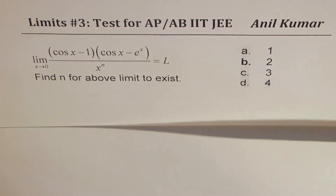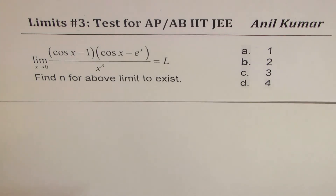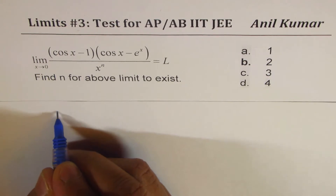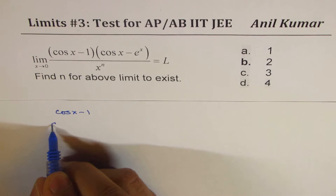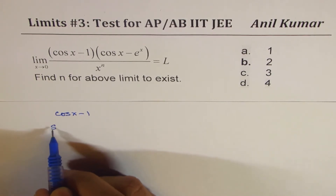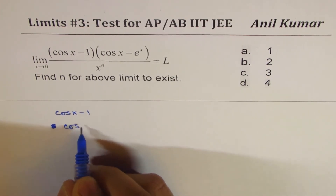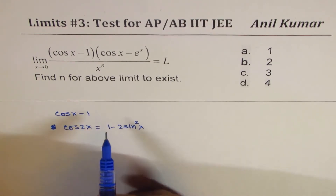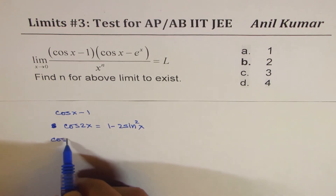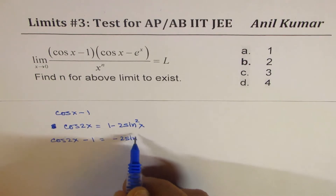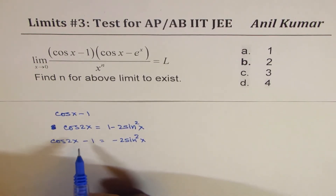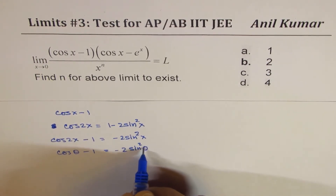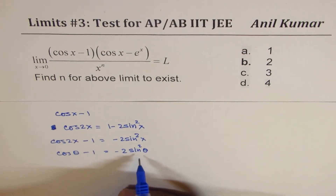The method I'm going to use involves several strategies. First, how to write cos x minus 1: we know cos 2x equals 1 minus 2 sine squared x. Rearranging, cos 2x minus 1 equals minus 2 sine squared x. Converting to half angle gives cos theta minus 1 equals minus 2 sine squared of theta over 2. So we can always write cos x minus 1 as minus 2 sine squared of x over 2.